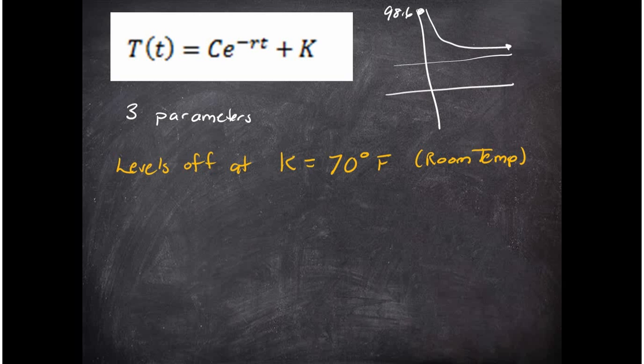There's what we call parameters. There's three parameters here: the first parameter is the C, the second parameter is this r, and the third parameter is this K. This e to the minus rt—what happens to it as time goes to infinity? As time goes on, this is damped out to zero.